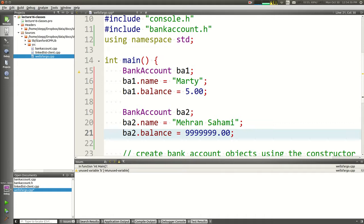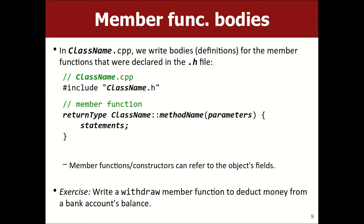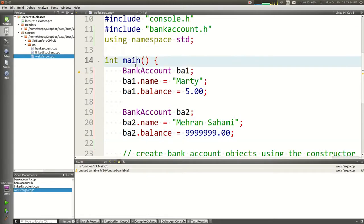Now let's talk about member functions. A bank account object is basically a blob of memory with enough space for a string and a double for whatever member variables you have — kind of like structs from last week. If you want to write member functions, you now need to write a .cpp file. Member functions have the same syntax as regular functions, except before the function name you write the class name followed by two colons — for example, 'void BankAccount::deposit(double amount)'.